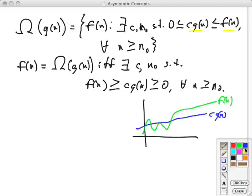And let's draw another line for the function we're studying. And so the point here is that after some n-naught, f(n) will always be above c·g(n), so c·g(n) provides a lower bound.